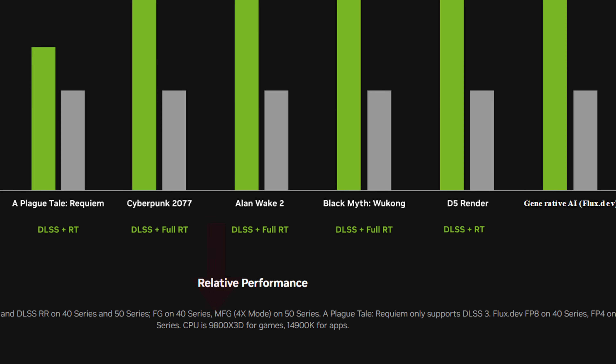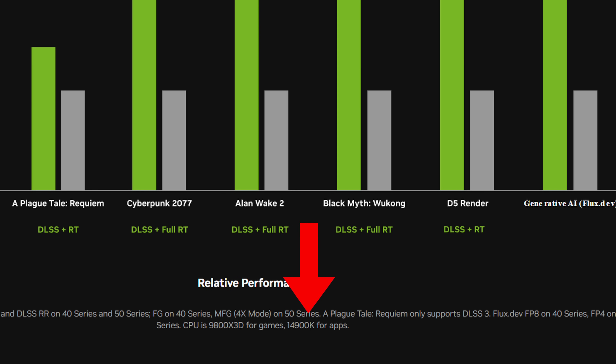On top of that, they're not even using the same CPU for all tests — a 9800X3D for the gaming test and an Intel 14900K for the application test. A Plague Tale Requiem only supports DLSS 3, so it still has frame generation but not multi-frame generation. Some point to this as a fair like-for-like comparison, but none of us are getting excited about comparing DLSS upscaling to DLSS upscaling — that's simply not what we want to know.